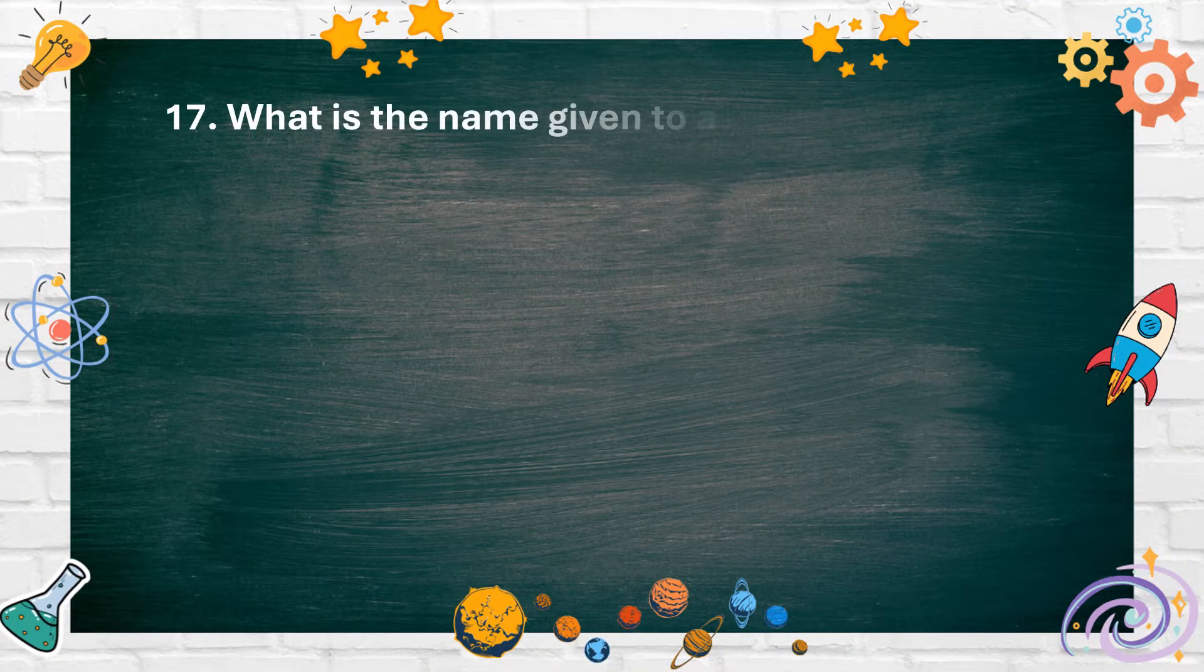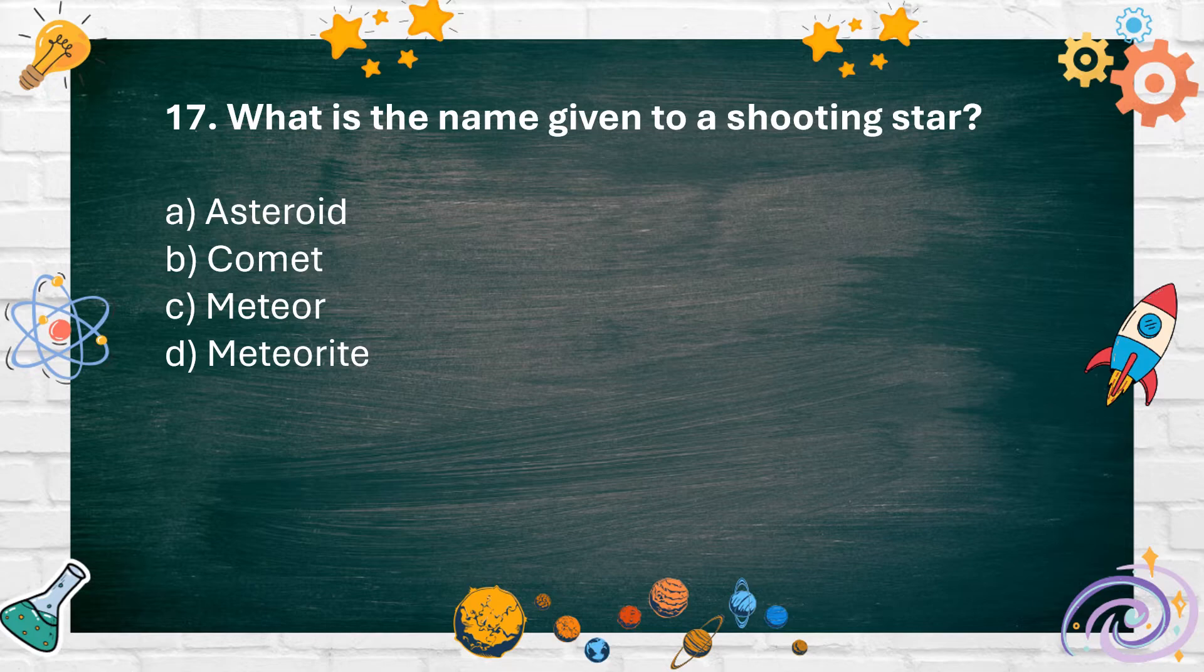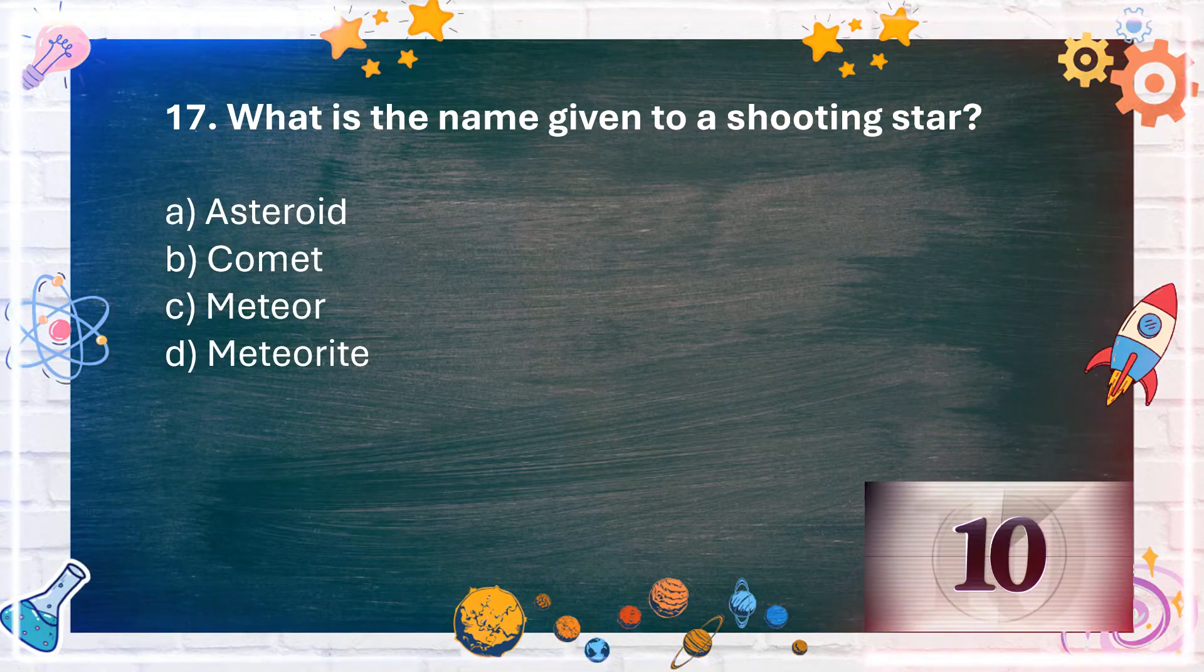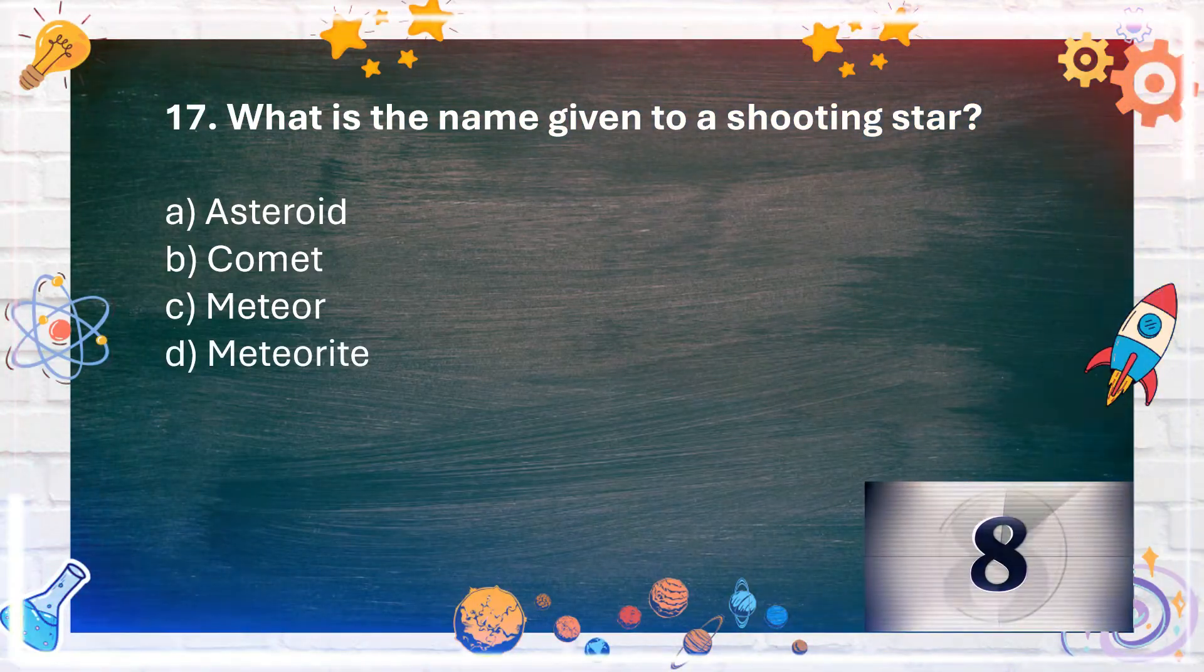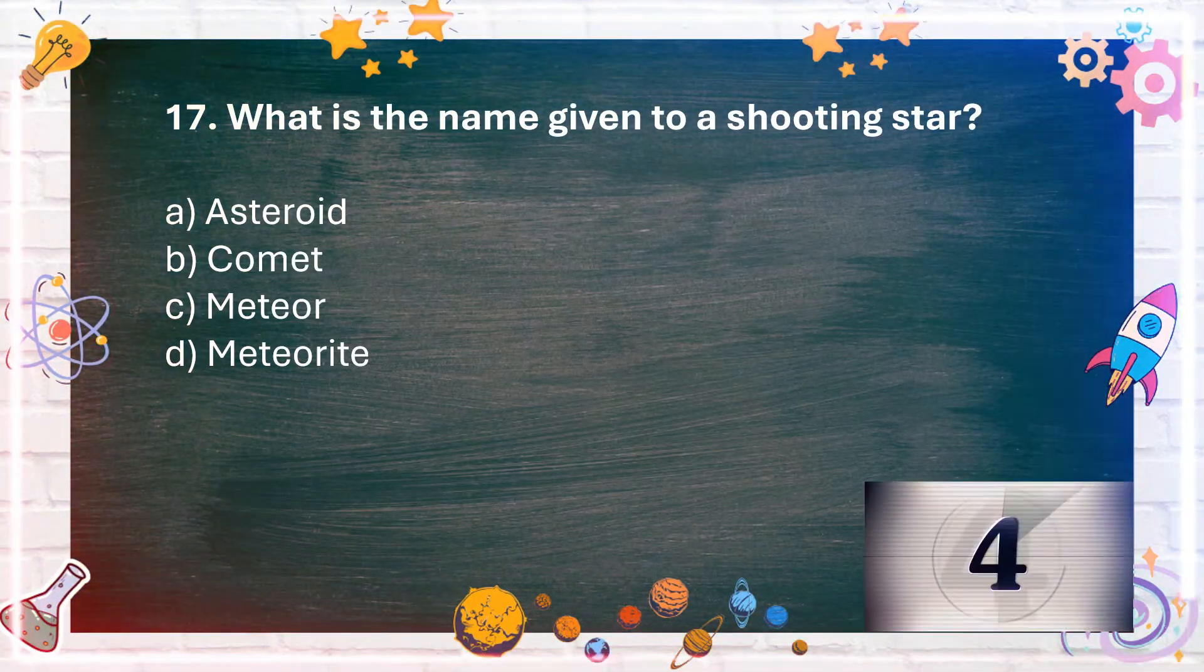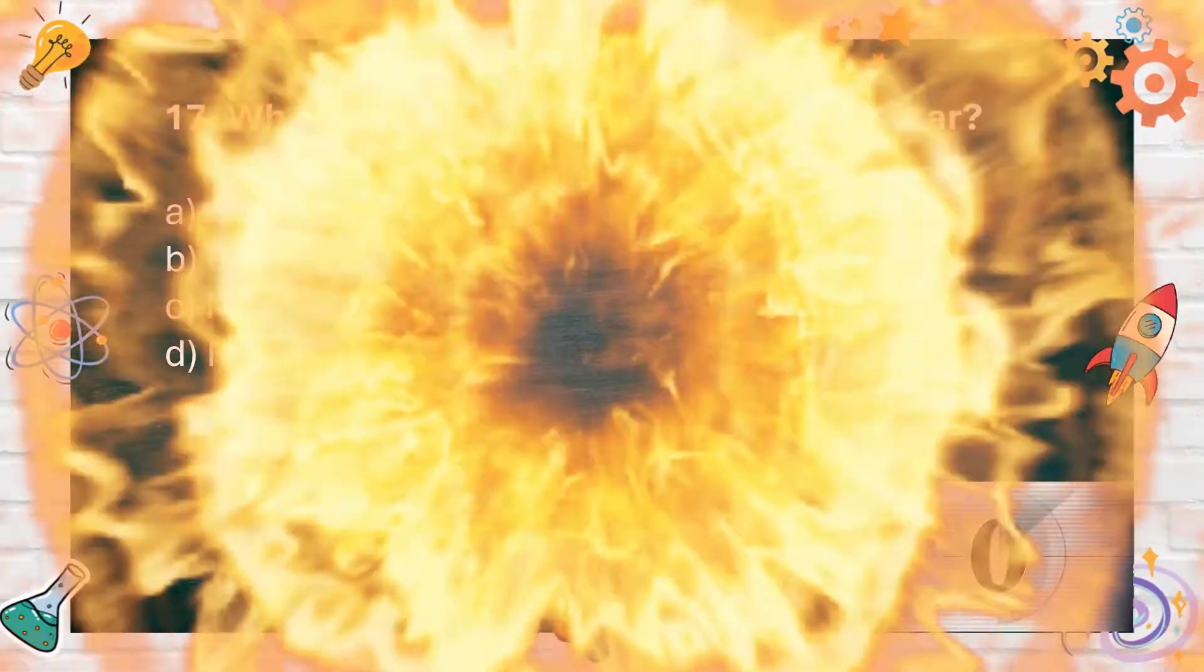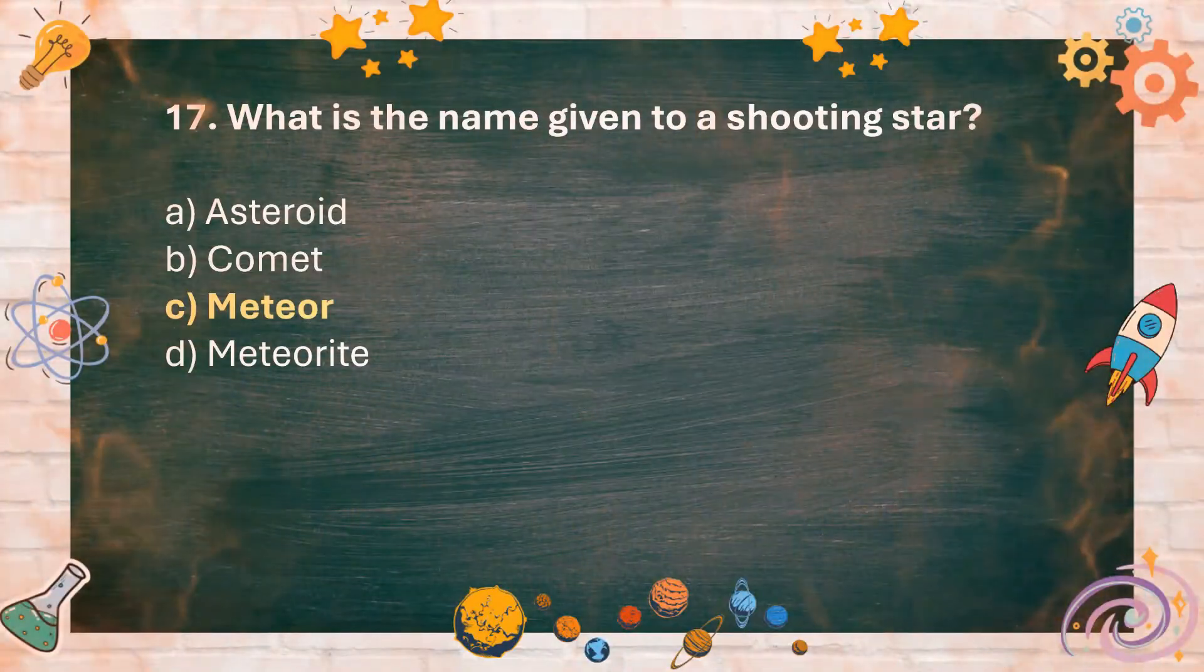Number 17: What is the name given to a shooting star? A. Asteroid, B. Comet, C. Meteor, D. Meteorite. The answer is C. Meteor.